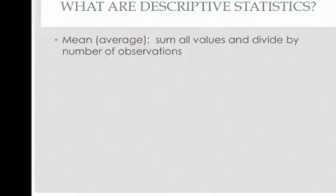The mean is the sum of all values divided by the number of observations. You're probably familiar with that. This is what it looks like in mathematical notation. This E here, this big E, it's an epsilon,